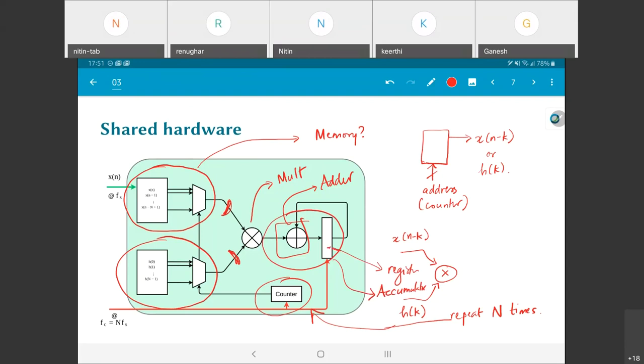So what does the accumulator do? It basically adds and stores the value. If I do this capital N times, it means that the nth time that I am doing it, the output of that register is essentially going to be the correct value that I want, or rather the output of the adder is going to be the correct value that I want, that is the y of n.